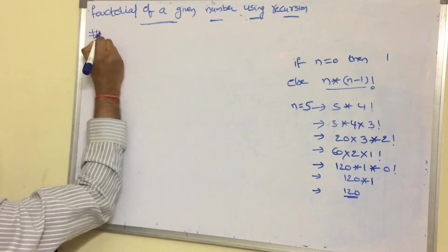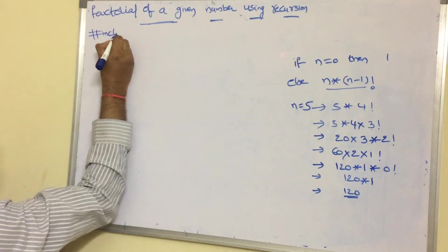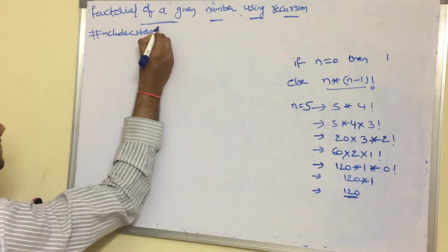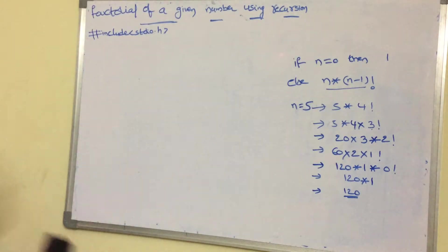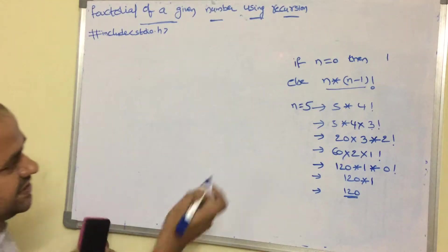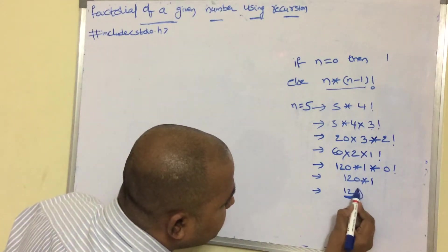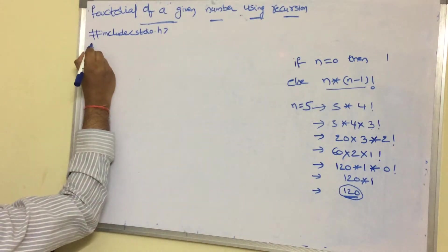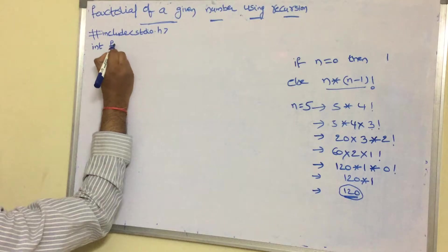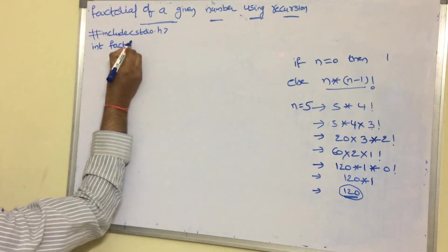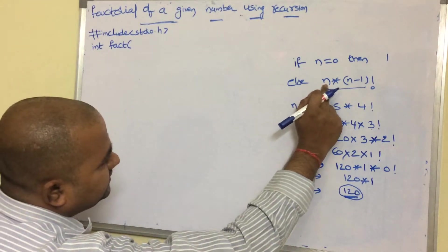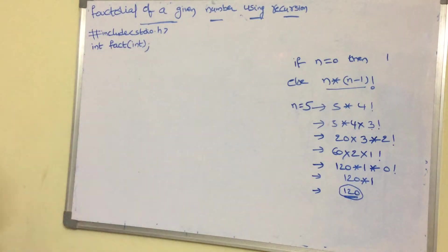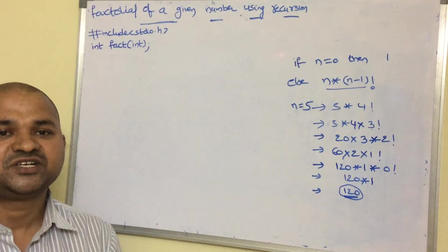Let us use the header file stdio.h because in our program we are using printf and scanf functions. So include stdio.h. The result of the factorial function is an integer value, so the return type of the function is int. Let us name the function 'fact'. The argument is an integer number, so: int fact(int n). This is the function declaration or function prototype.